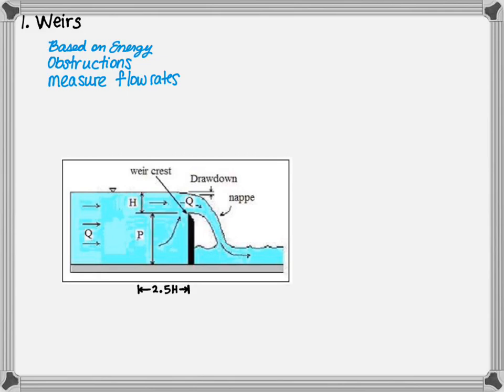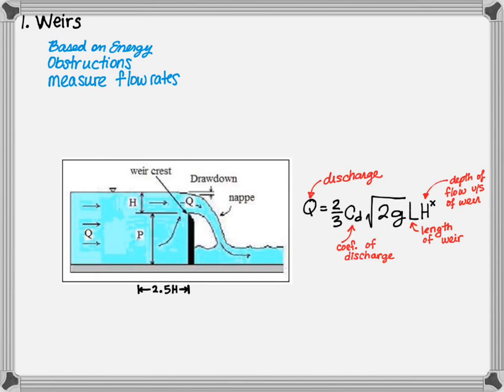Accurate measurements of flow rate is not possible when weirs are submerged. Thus, our entire conversation will be based on free-flowing weirs.